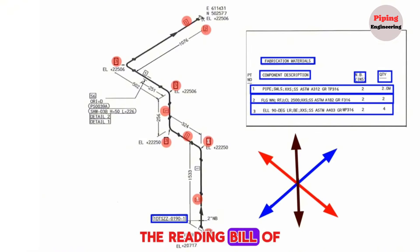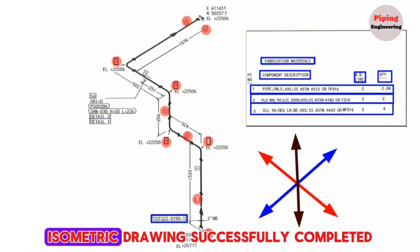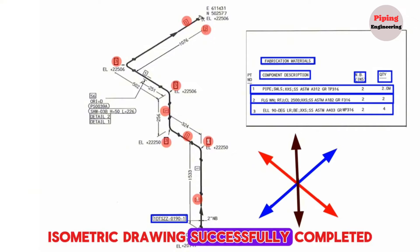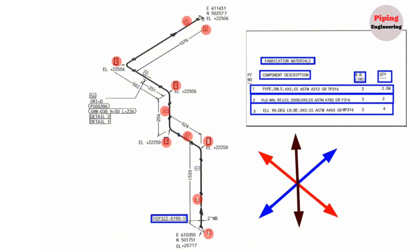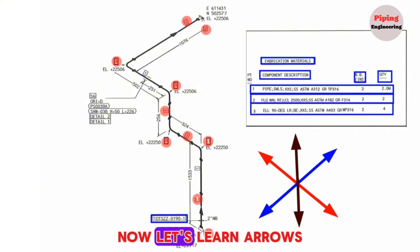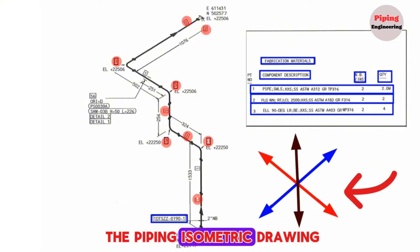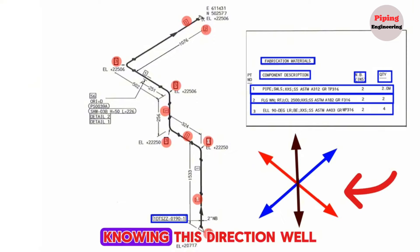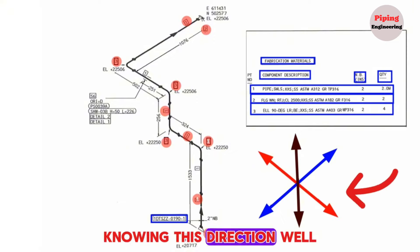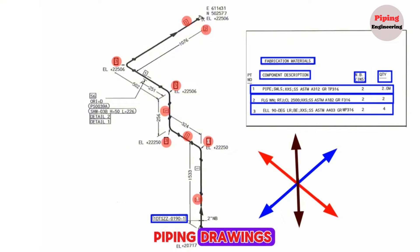Reading the bill of materials in the piping isometric drawing has been successfully completed. Now let's learn about the arrows showing the directions in the piping isometric drawing. Knowing these directions well helps us read the piping drawings.